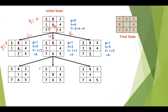We need to take the state which has the lowest f score value. You can clearly see that the middle one has the least f score value, that is 4. So start exploring that node.